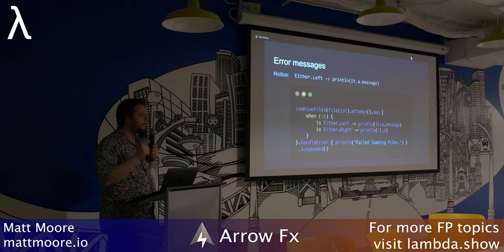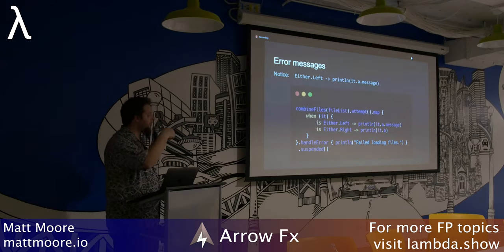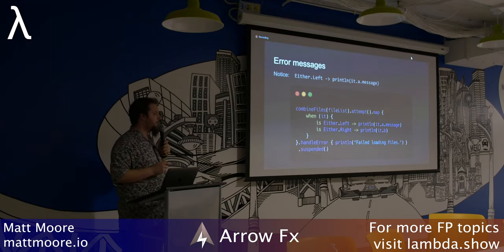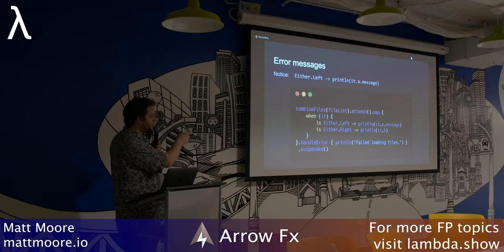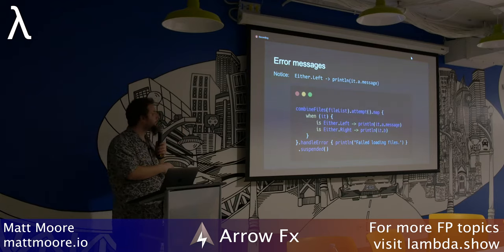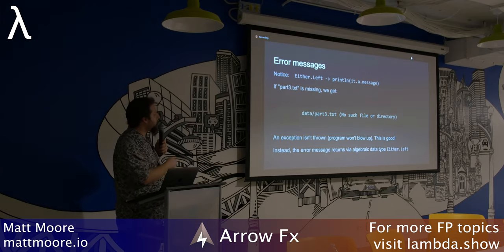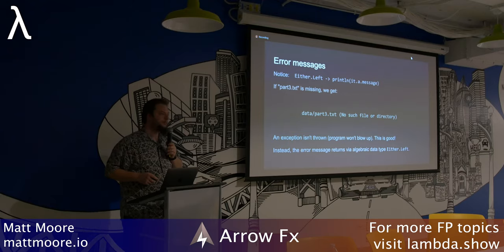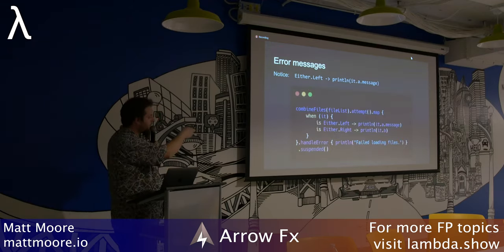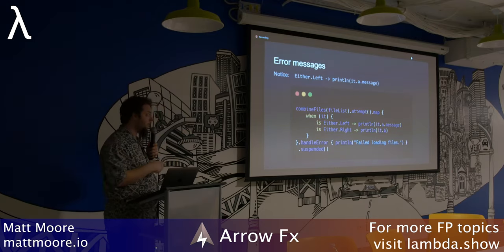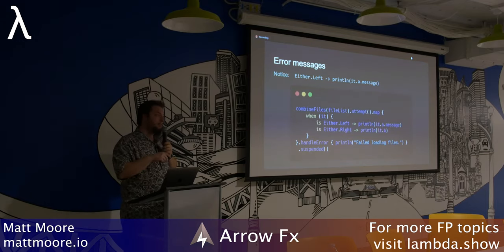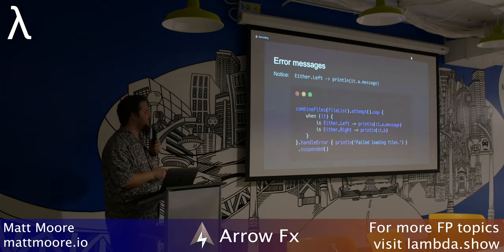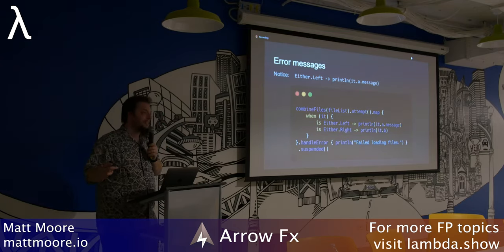What if one file fails to load? If the second file fails, the whole thing halts execution. Using it.a.message, if part three is missing, we get the exception printed as text: 'data part three, no such valid directory.' That is handled by either.left — it knows which of the things actually failed. There are other ways you can control that behavior by customizing monads, but that's a topic for another talk. Error handling is not the only thing you can do with monads.